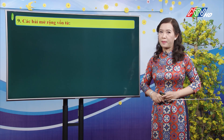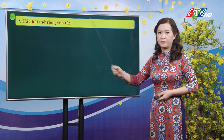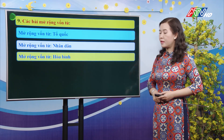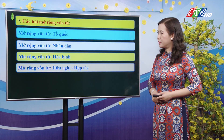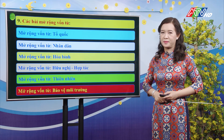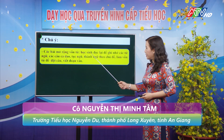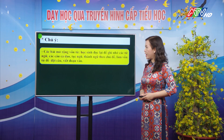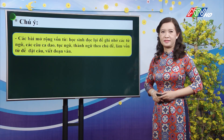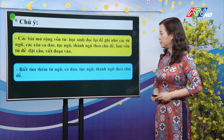Bên cạnh các nội dung ôn tập, các bài học từ đầu năm tới giờ có những bài mở rộng vốn từ: mở rộng vốn từ tổ quốc, nhân dân, hòa bình, hữu nghị-hợp tác, thiên nhiên, bảo vệ môi trường. Đối với các bài mở rộng vốn từ này, các con đọc lại và ghi nhớ các từ ngữ, câu ca dao, tục ngữ, thành ngữ theo chủ đề để làm vốn kiến thức đặt câu, viết đoạn văn, và tìm thêm những từ ngữ theo chủ đề.